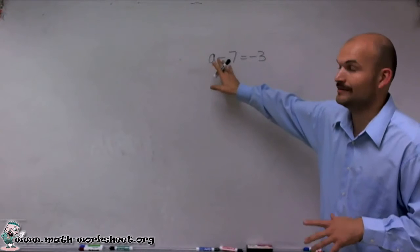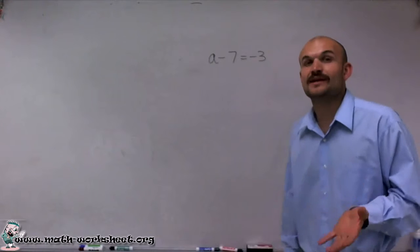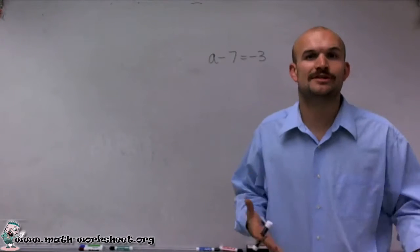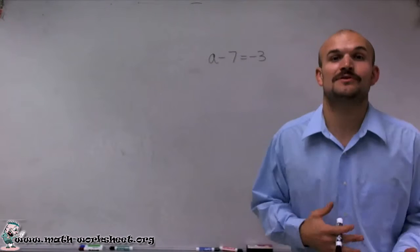So we have our variable a, and what this equation states is a minus 7 equals negative 3. It's very common for students just to try to do these in your head. What number minus 7 is going to equal negative 3? And a lot of times you can do that in your head.